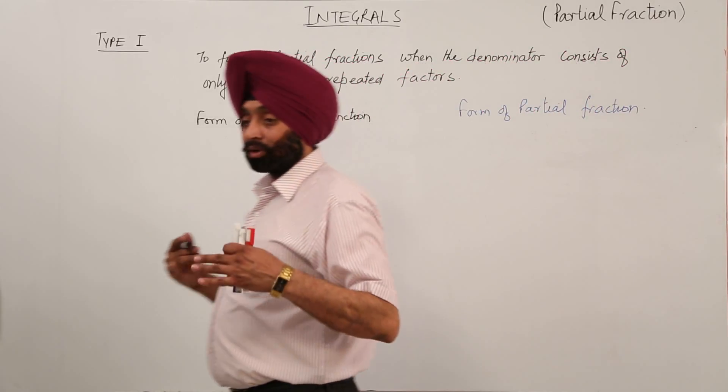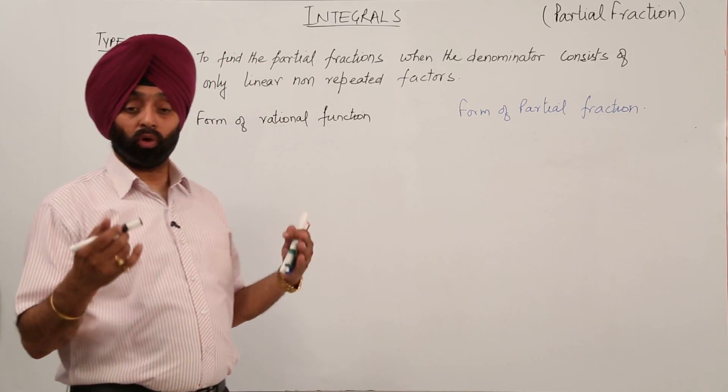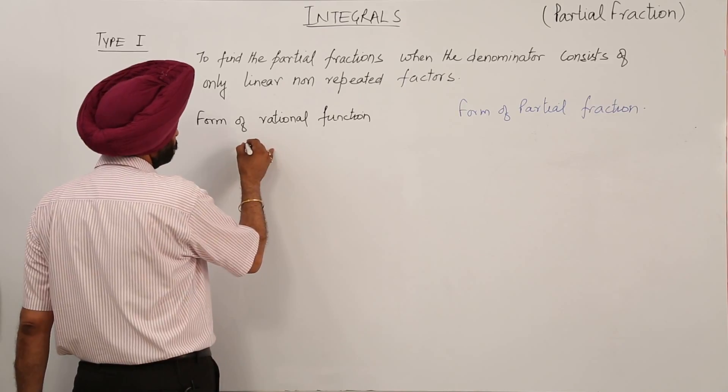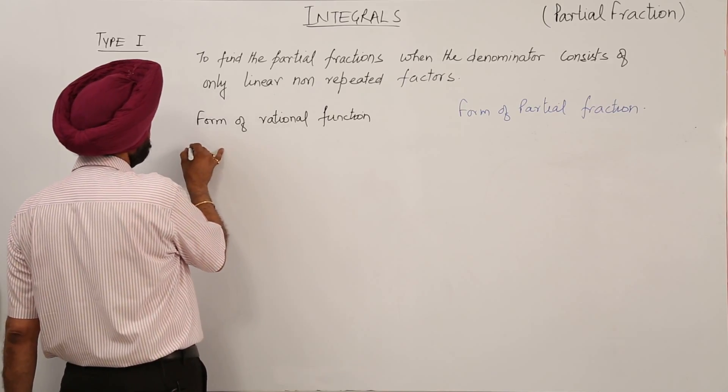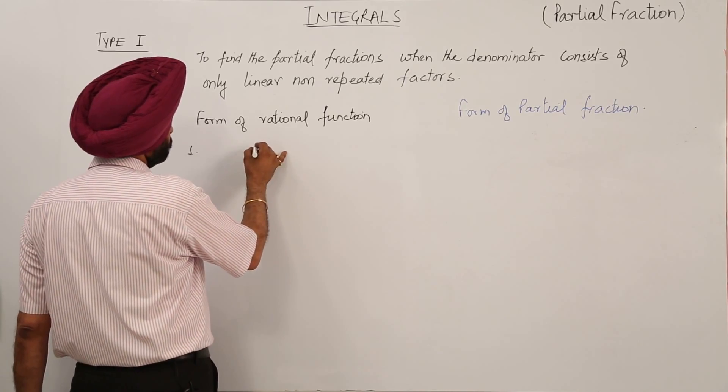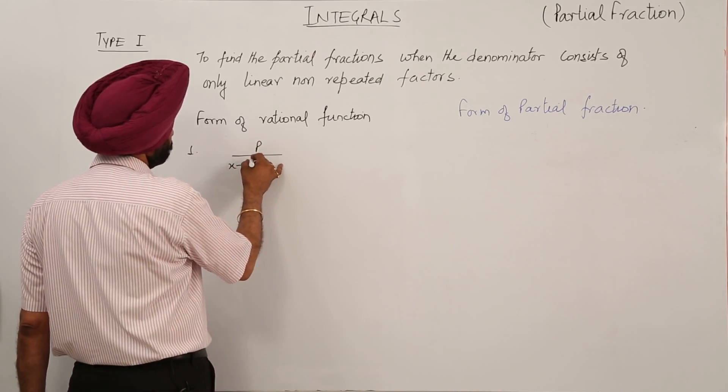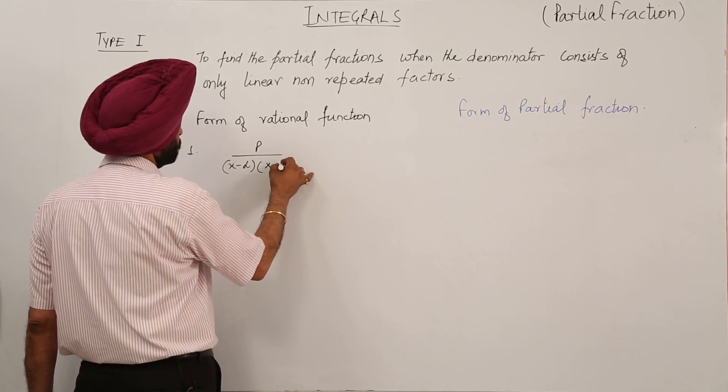Now what type of questions, in which form can the questions be? The question can be in the form of number 1, it can be P upon x minus alpha x minus beta.